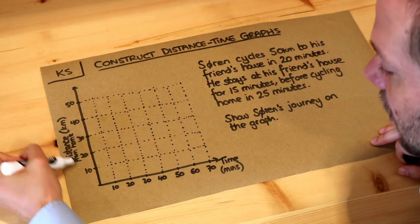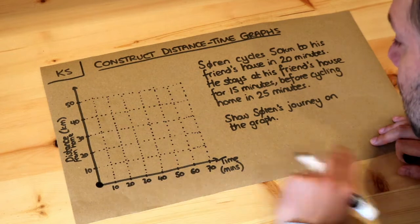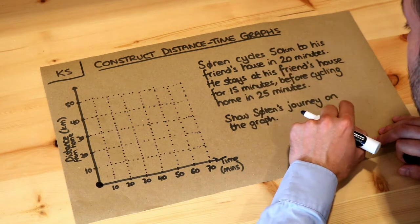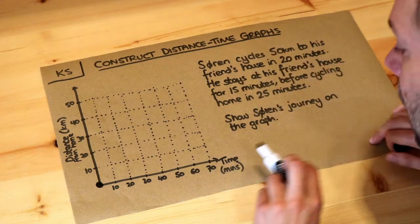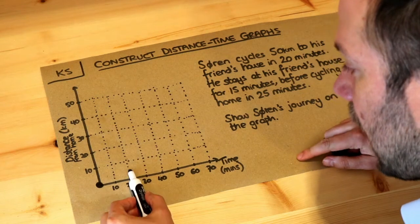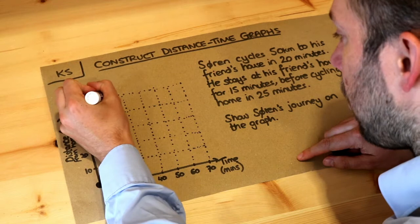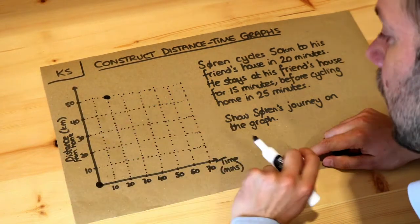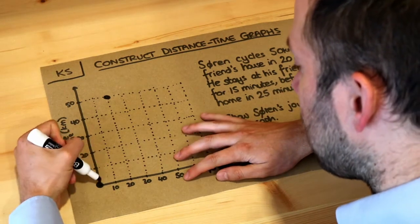He's going to start at home, so he's going to start at a distance of zero at time zero — that's where he's starting. He cycles 50 kilometres in 20 minutes, so after 20 minutes he's gone 50 kilometres. You can see the 50 there — 20 minutes, 50 kilometres — and then we just connect this up with a straight line.